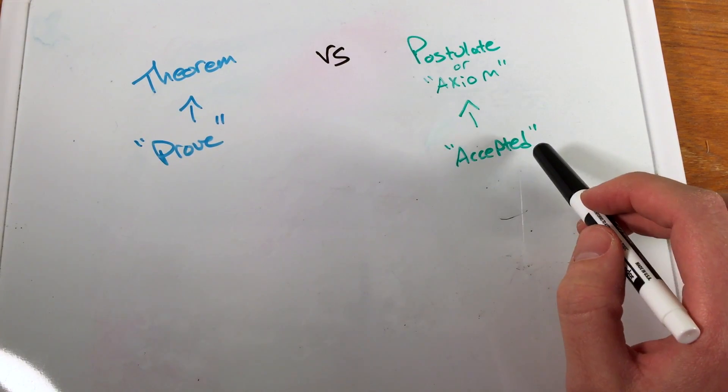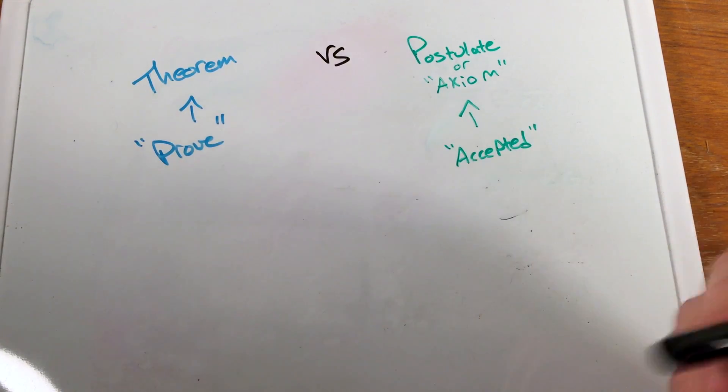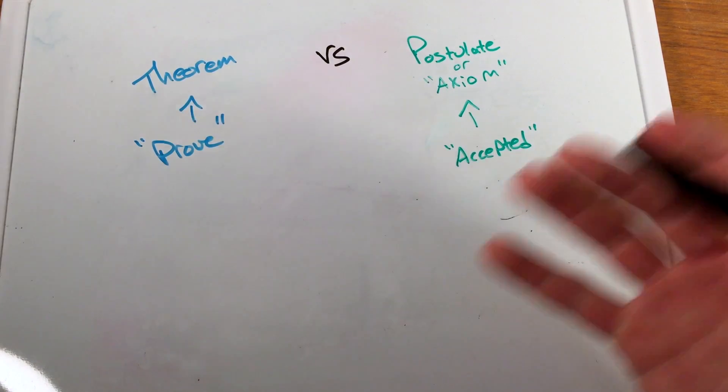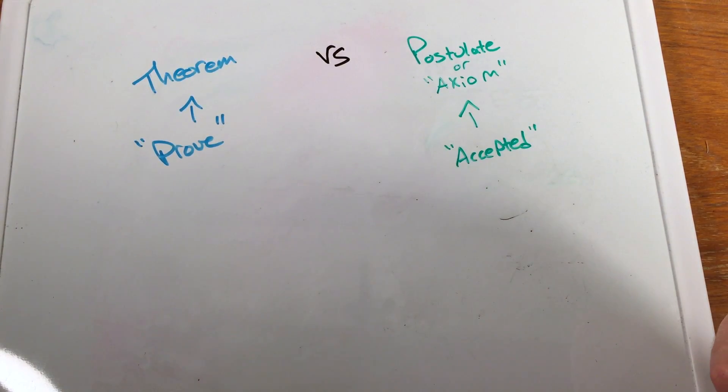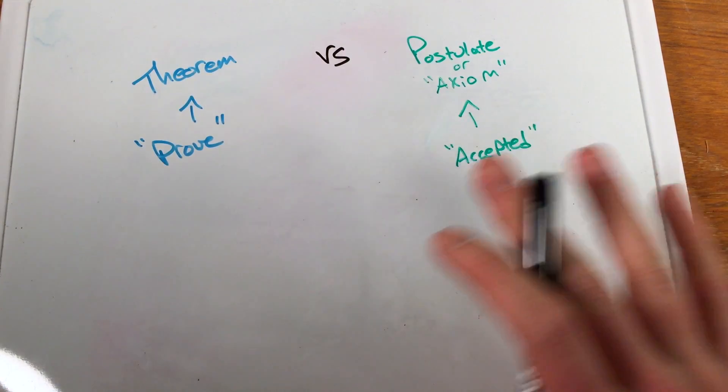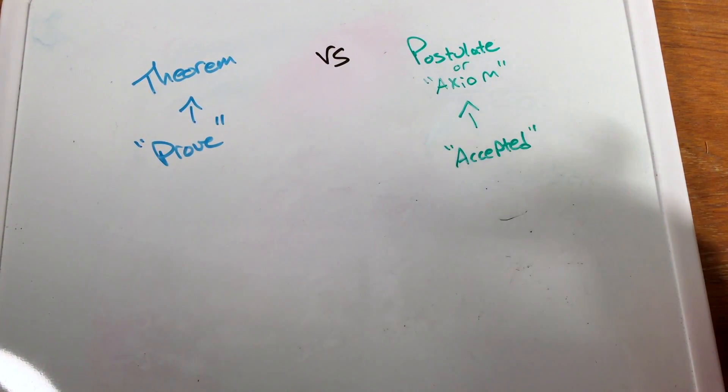So again, postulates are little building blocks. We use that for building things that we accept to be true. There's certain things in mathematics that we have to just accept to be true. We can't start with them already as a proof, because the building blocks we just have to have the basics, like, hey, we accept these things to be true, that we know them to be true.